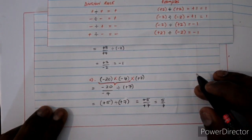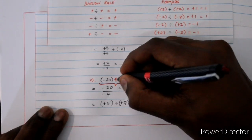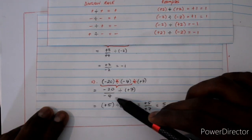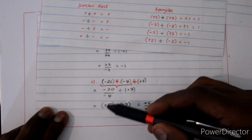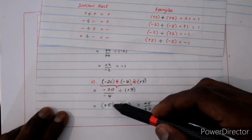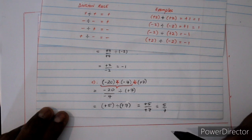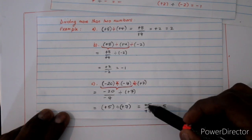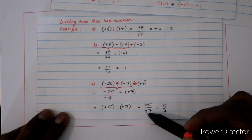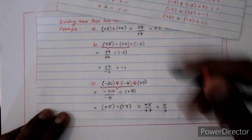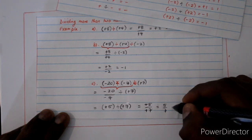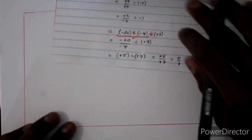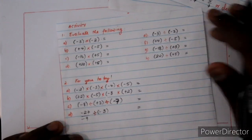For another example — negative 20 divided by negative 4 divided by positive 7 — solve the first pair: negative divided by negative is positive, and 20 divided by 4 is 5, giving positive 5. Then positive 5 divided by positive 7 — positive divided by positive is positive — so you can write the answer as 5 over 7 or as a decimal.